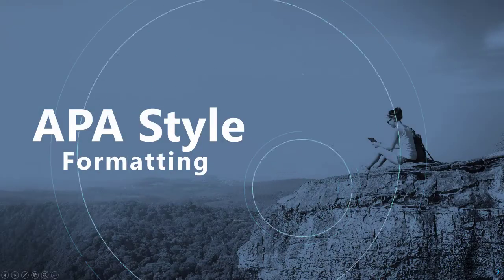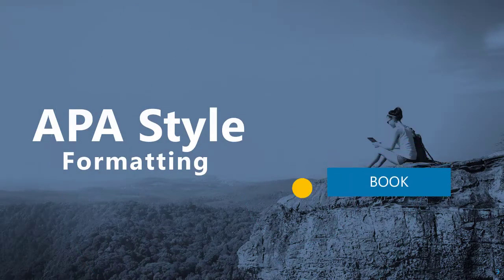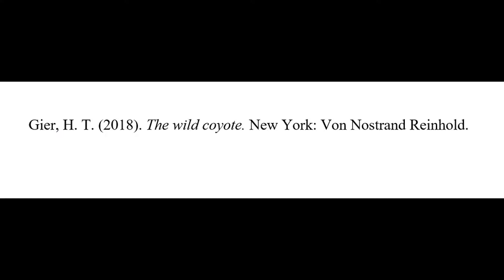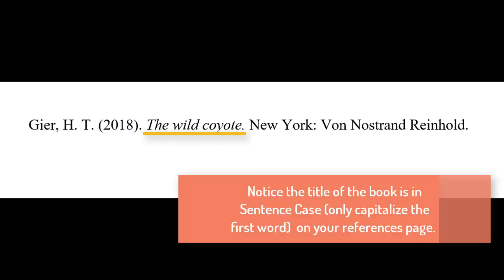Let's look at some examples of formatting references in APA style. We'll start with a book. The book citation begins with the author's last name, comma, first initials. Next, the year of publication in parentheses, followed by a period, the title of the book in italics, the city of publication, and the publisher.